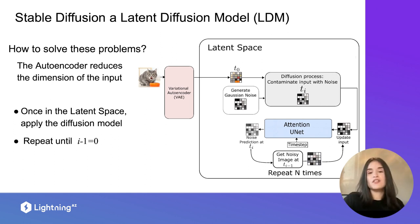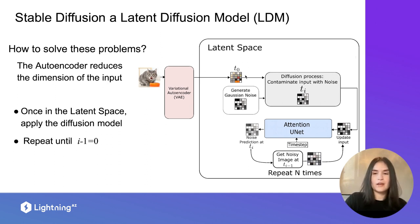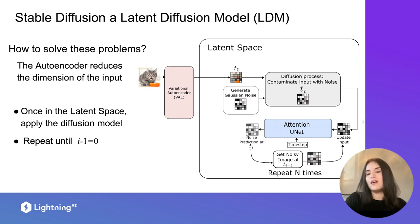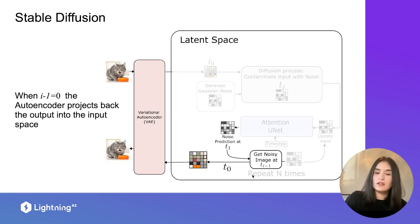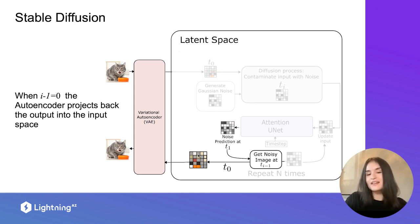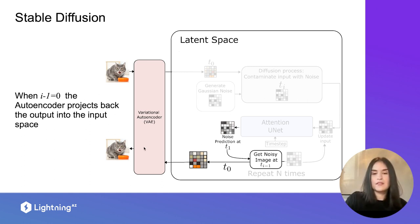Why work in this large, slow world when we can work in a small latent space and then come and go between them? Stable diffusion does exactly that — it trains a variational autoencoder to move from large high-resolution images to latent space. Then in that latent space it proceeds with diffusion: contaminate the image, pass it through the U-Net, estimate the noise, recover the previous image, and repeat. Eventually we get a small, clean image, pass it through the decoder, and recover our full-size image.